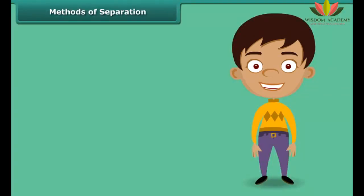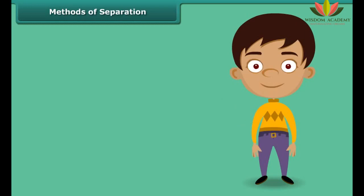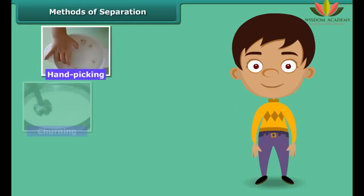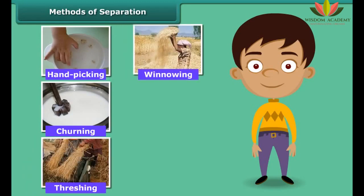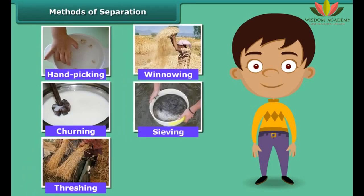You would have some idea about the methods of separation. In fact, you would have used some of these methods in your day-to-day life. Some methods commonly used to separate the components of a mixture are: hand picking, churning, threshing, winnowing and sieving. The basis for choosing a method of separation depends upon the physical properties of the components.